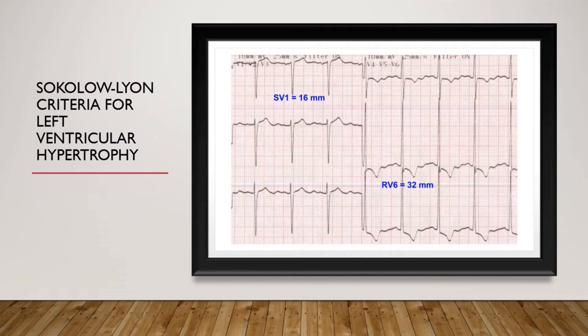In addition, you can see ST depression in V5 and V6, along with T wave inversion in V4, V5, and V6. These are features of left ventricular hypertrophy.